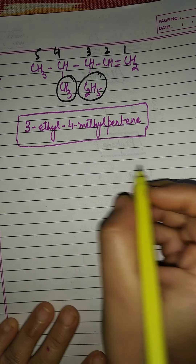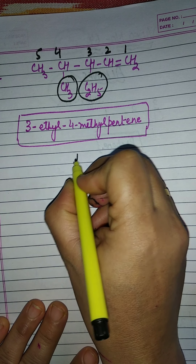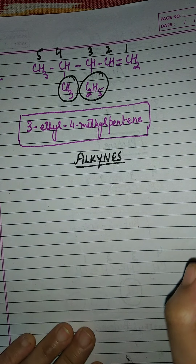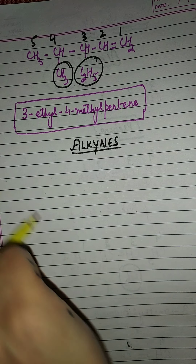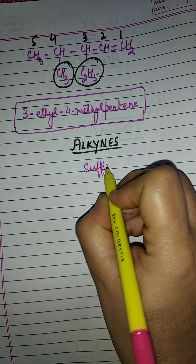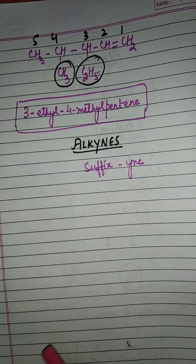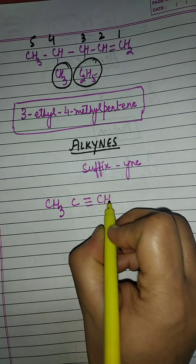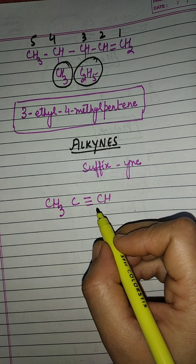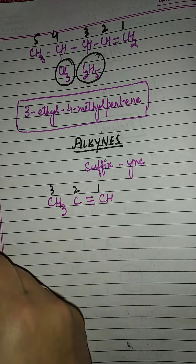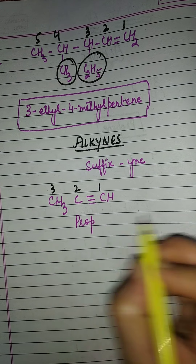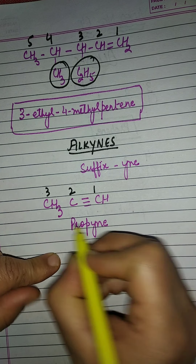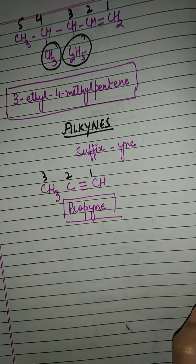Now we come to the third type of hydrocarbon — alkynes — which contain triple bonds. All the rules are the same, but here the suffix used is 'yne' instead of 'ene'. Let's take an example. Suppose the compound is CH₃C≡CH. The triple bond should get the least position: 1, 2, 3. The word root is 'prop'. No need to specify the position of the triple bond as it is present at position number 1. So the suffix used is 'yne' and the name is propyne.